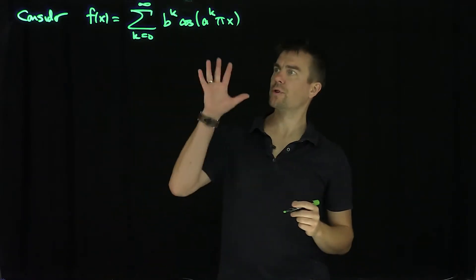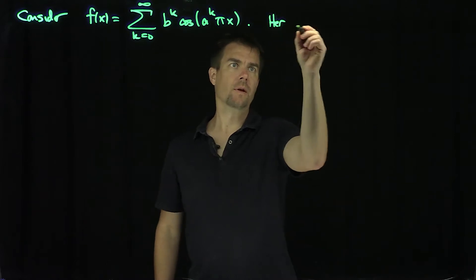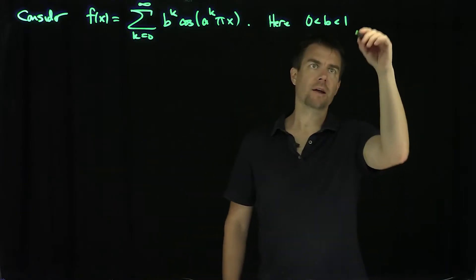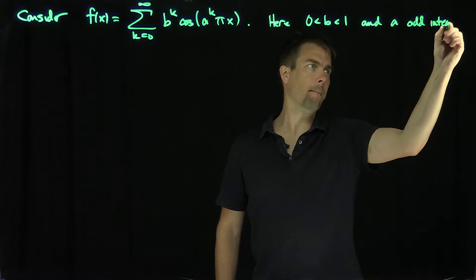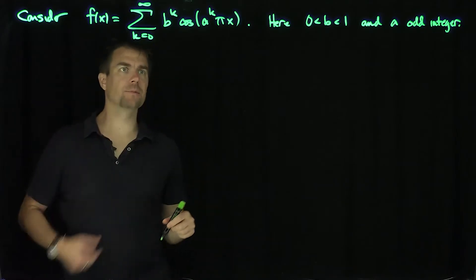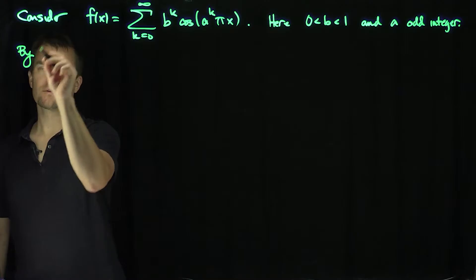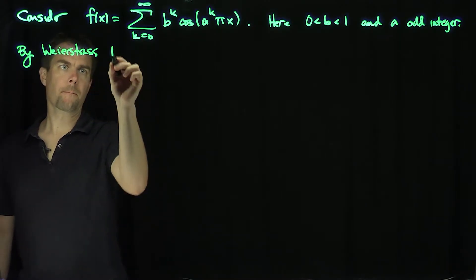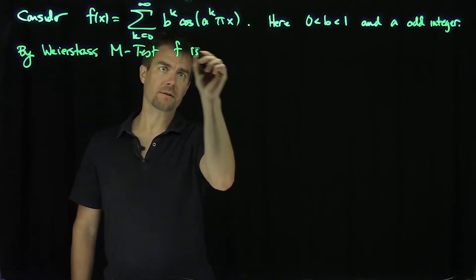I'm going to put some initial restrictions on a and b. b is between 0 and 1, and a is an odd integer — those are my initial restrictions on a and b. By the Weierstrass M-test, since all the partial terms are continuous, f of x is everywhere continuous.